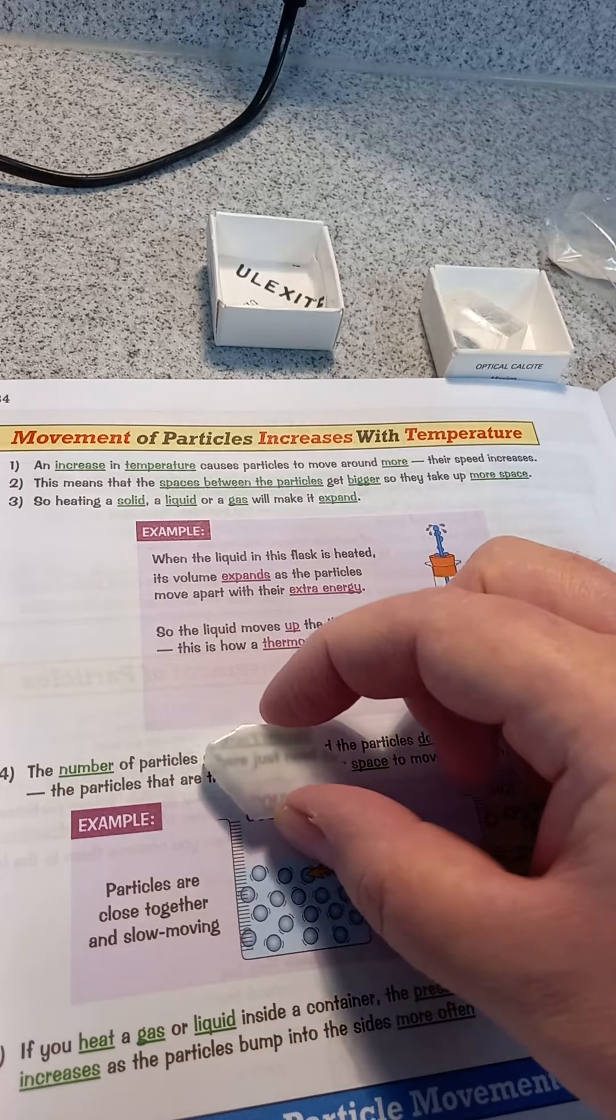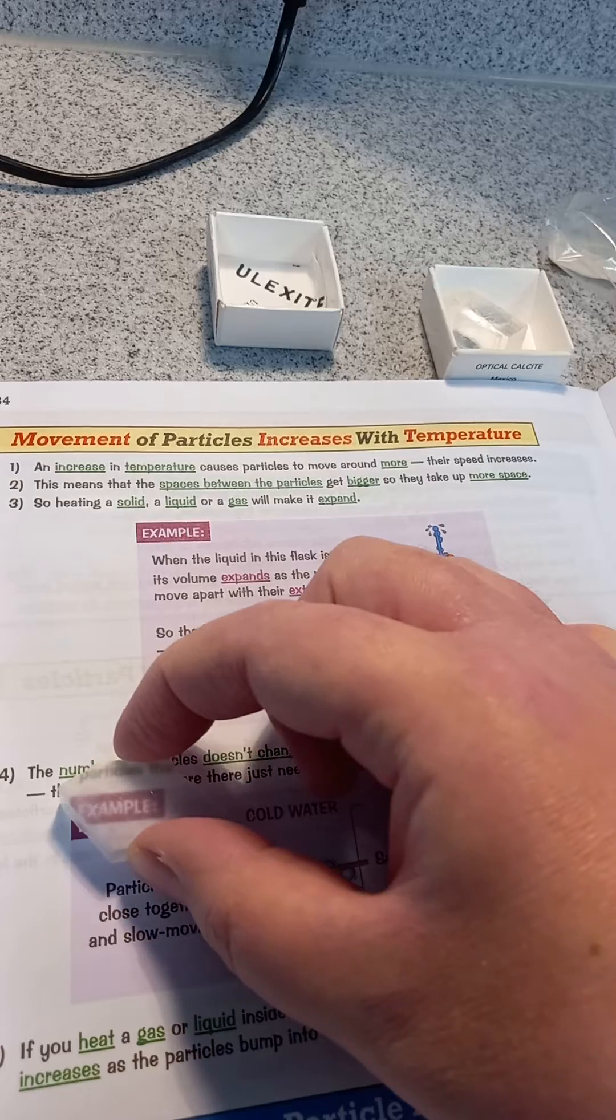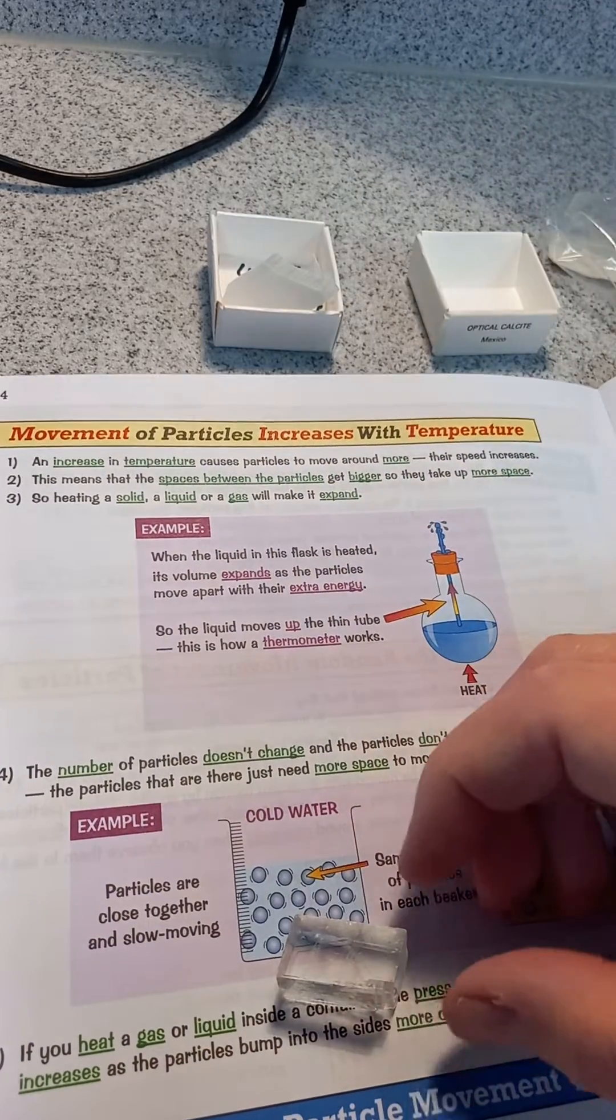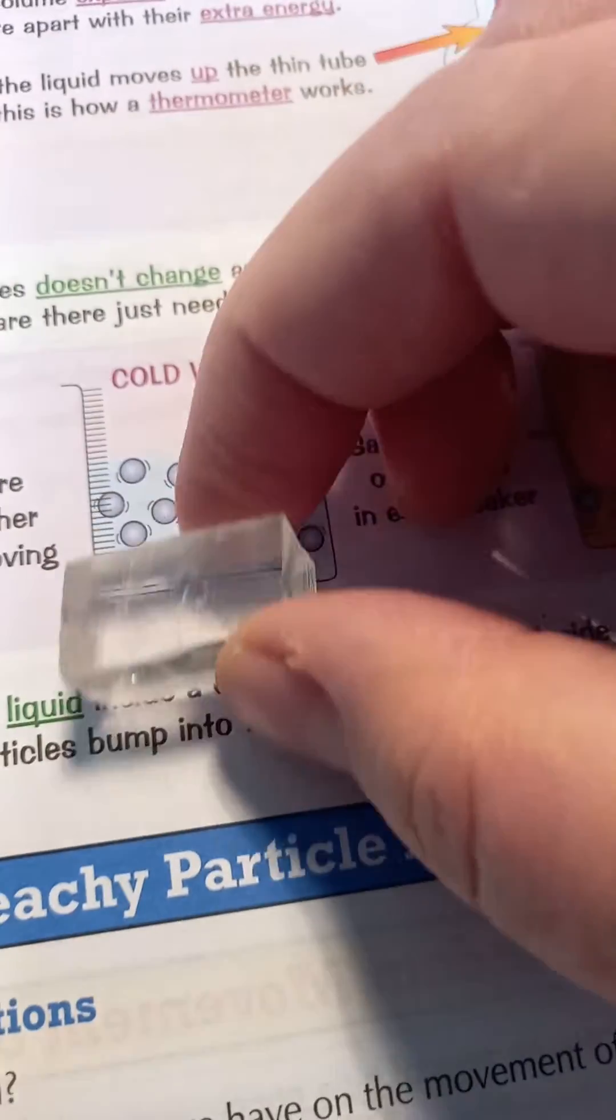It gets it across well using the camera, but it's really good in reality. Then we've got optical calcite here which is double refracting. So let's have a look. Take the phone out there, closer. You should be able to see...